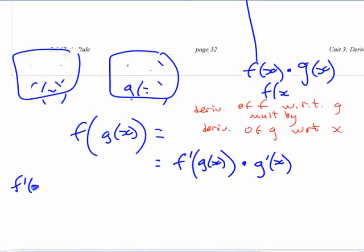It's not f prime of x times g prime of x, because that would be saying this is what you're looking for. If you want the derivative of the whole thing, if you want this, the only thing you can do is this.